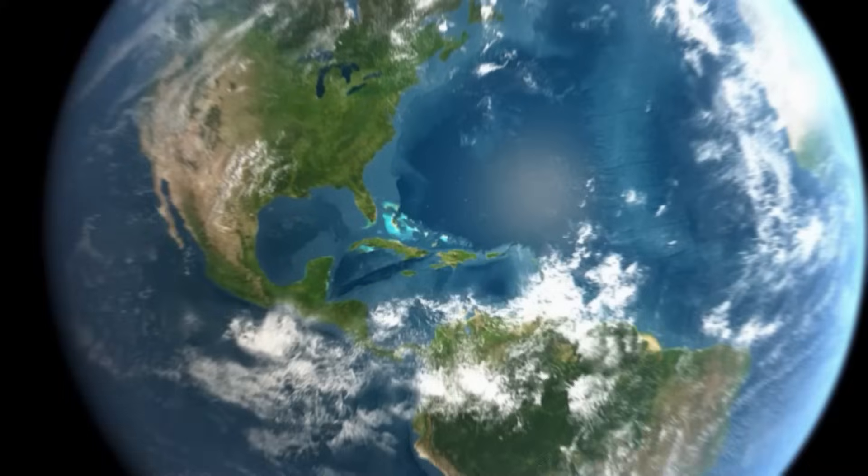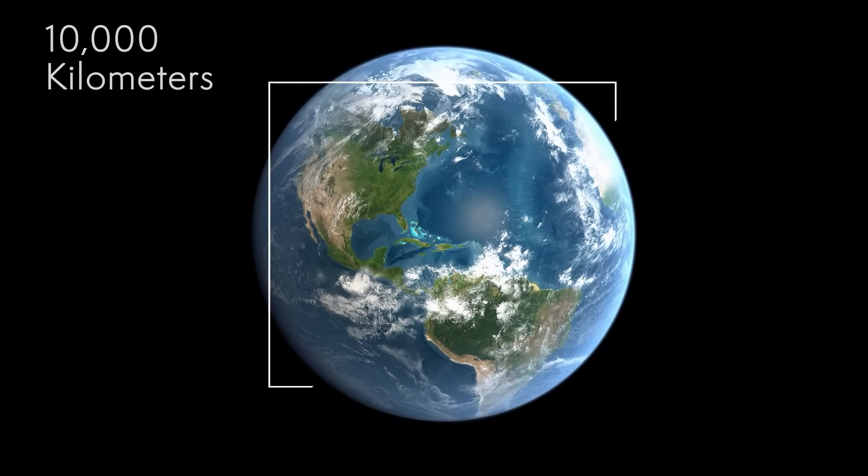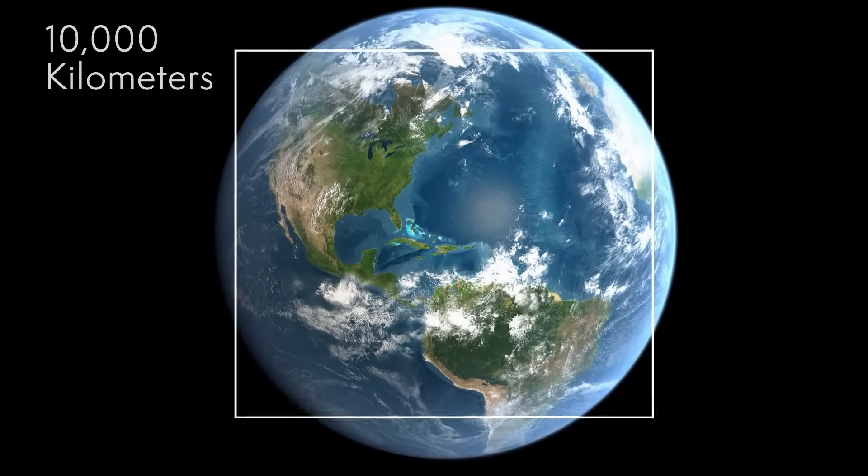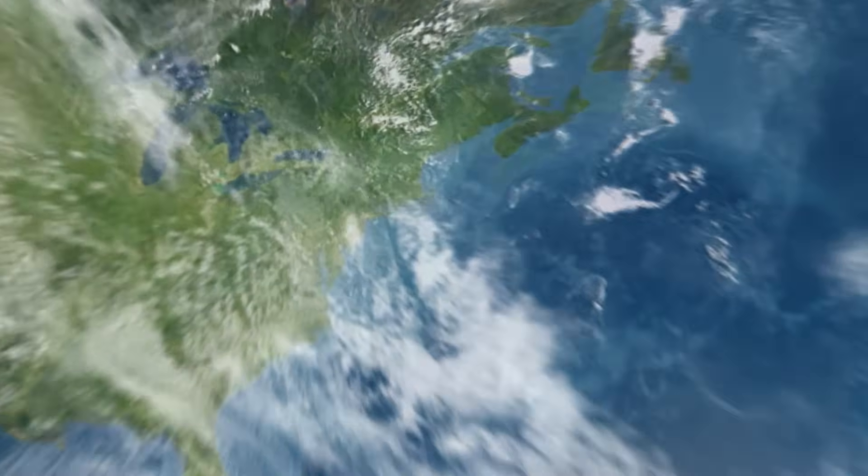Before we dive in, let's back up, way back. The diameter of the Earth is 10,000 kilometers. Zooming in on Boston, the size of the MIT campus is one kilometer, four orders of magnitude smaller.